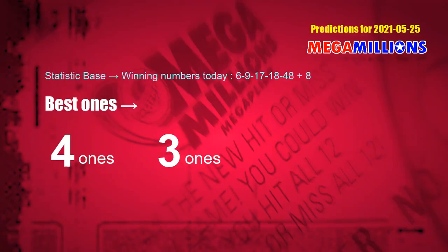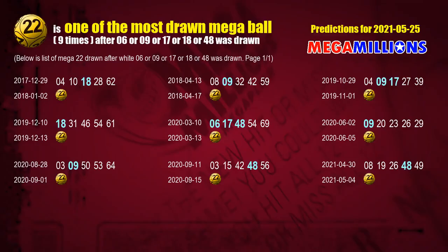According to the statistics above, with white balls 06, 09, 17, 18, 48 drawn today, the frequent following ones are 4-ones and 3-ones. After getting the following ones, we can use following number statistics to find out the following Mega Ball numbers too.